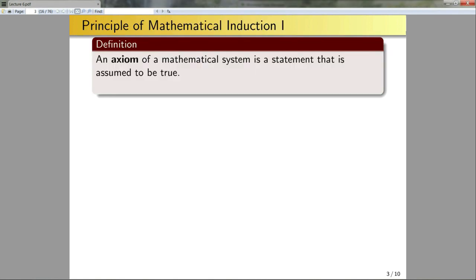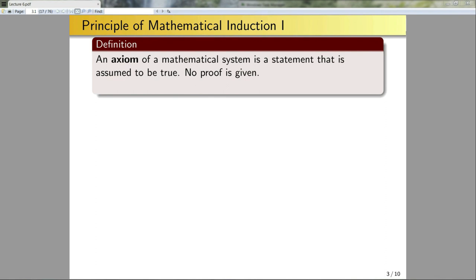Now I'm going to introduce the principle of mathematical induction. Before I do this I want to formally define what an axiom is. An axiom of a mathematical system is a statement that is assumed to be true — no proof is given, I just say this is true. Examples of axioms are things like: one is a number; for any given number I can add one to get a new number; parallel lines do not cross.